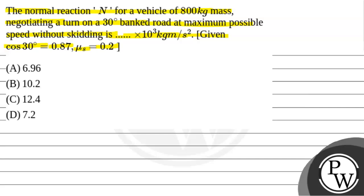So basically, what we have to do is analyze a vehicle whose mass is equal to 800 kg negotiating a turn banked at an angle theta equal to 30 degrees. We need to find the normal reaction on that vehicle at maximum possible speed without skidding.